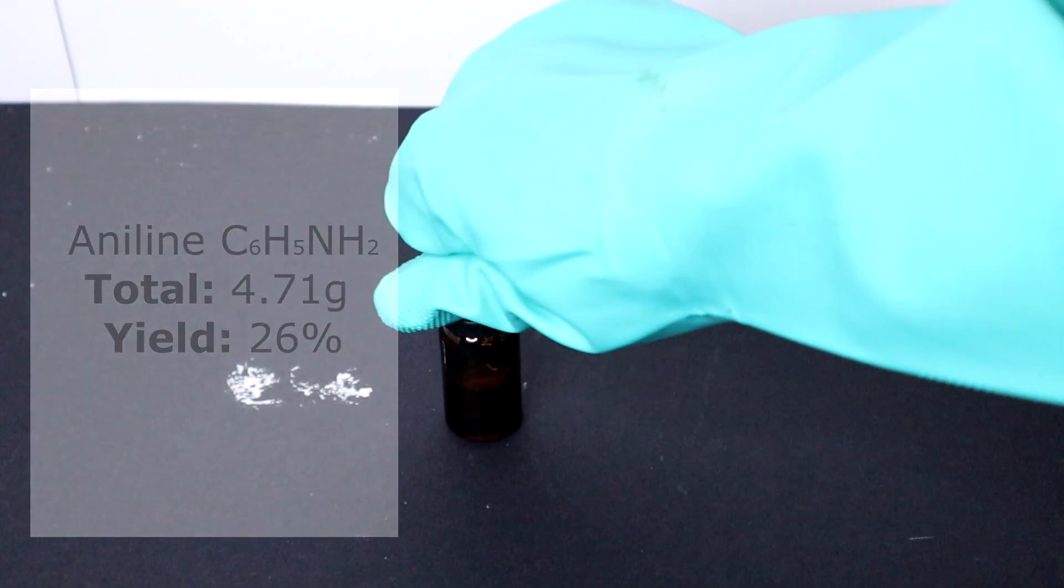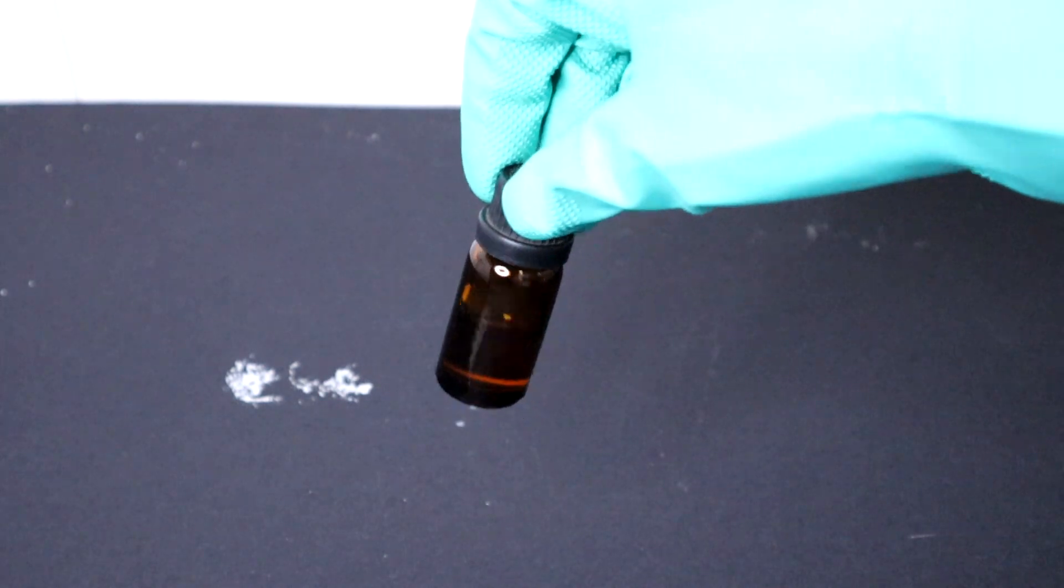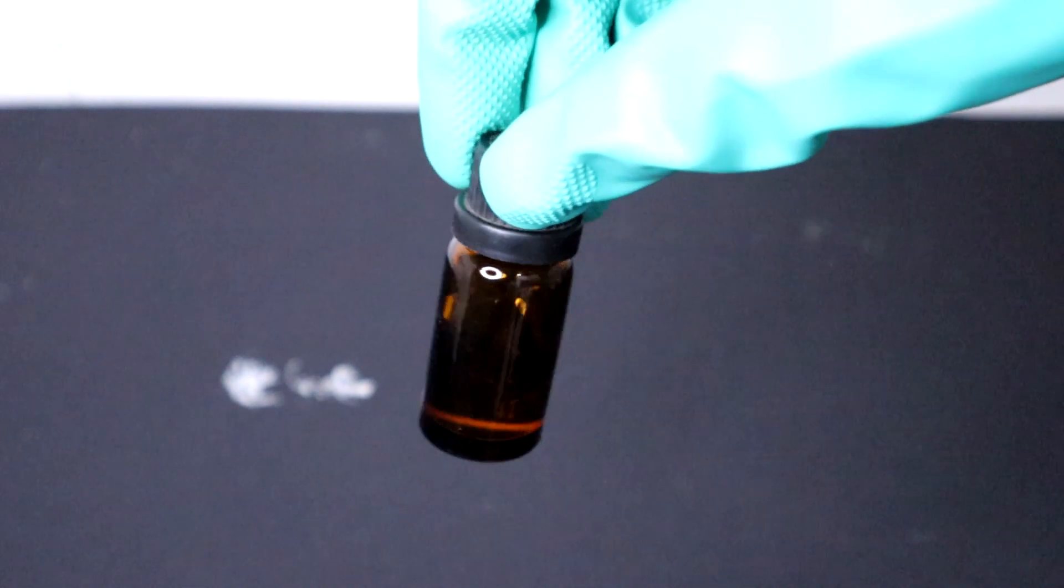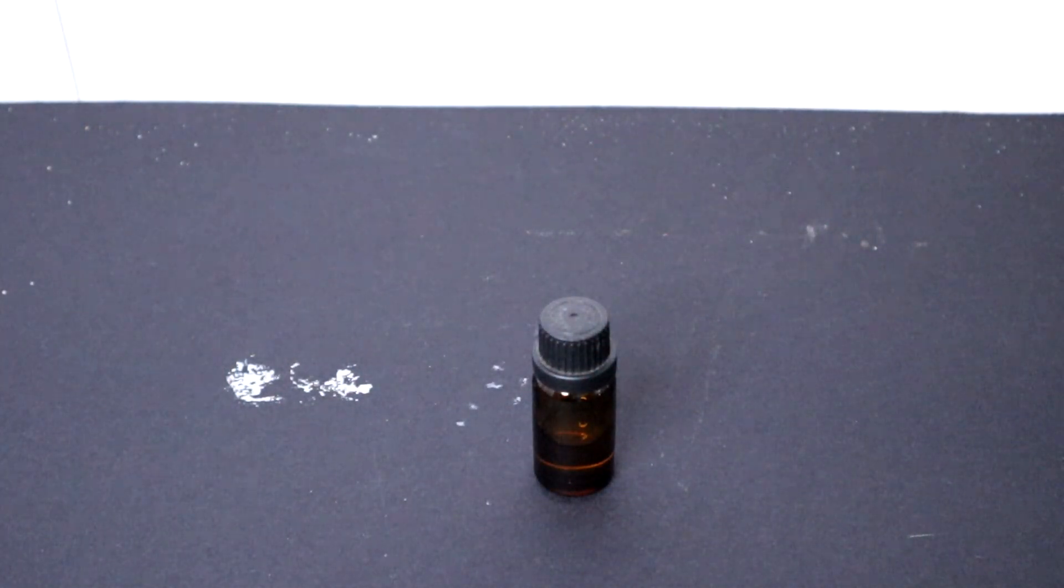But equally important, can we talk about the yield? 26% is really disappointing, and considering aniline is so useful, I'm planning on repeating the same reaction. But I need your help. If you have any tips or ideas on how I could help improve my yield, I'd love to hear about it in the comment section below. Otherwise, thank you for watching, and see you soon.